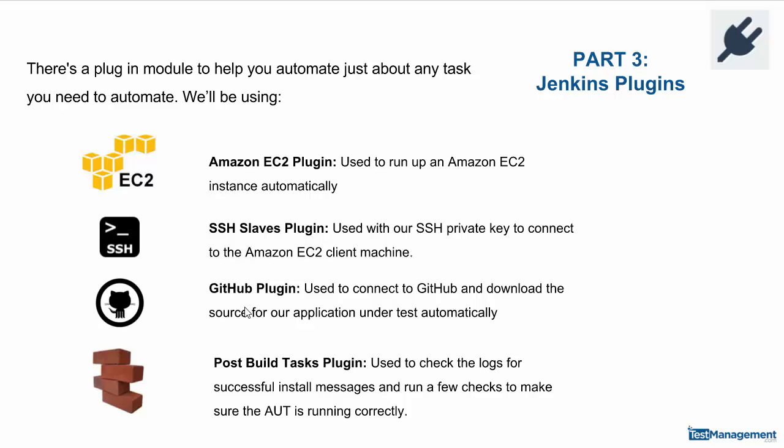The third is the Git plugin. The application we're running, which we're going to be testing and installing, is available on GitHub, and there is a plugin for Jenkins that allows us to connect to GitHub, download that source, and then do the build, install, and run-up of the app. The fourth plugin is post build tasks — these allow us to configure Jenkins to run tasks once the build has completed, such as checks, log file monitoring, and various tasks to make sure that everything's running correctly.